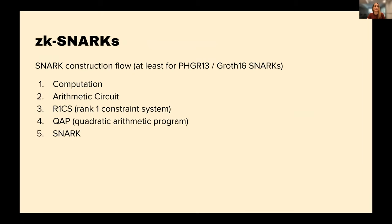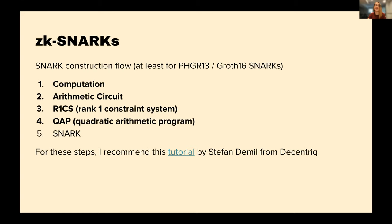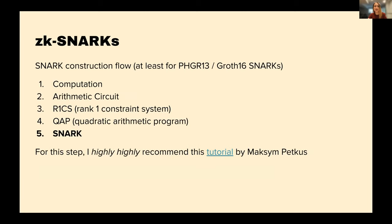I won't go over exactly how ZK-SNARKs work because that's a large topic, but many people have explained it well. To break down a ZK-SNARK, there are roughly five steps: first is computation — breaking down the computation to an arithmetic circuit; then a Rank-1 Constraint System; then transferring that to a Quadratic Arithmetic Program; and finally the SNARK itself. There's a great tutorial explaining the first four steps well, and the last step is explained by Maksym Petkus in a tutorial that goes very deeply and thoroughly into how a SNARK is constructed.